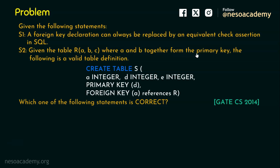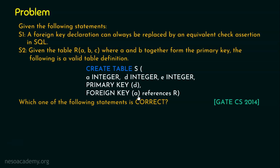...the following is a valid table definition: create table S with attributes A of integer type, D of integer type, E of integer type, where D is the primary key. There is also a foreign key where A references relation R, and R has three attributes A, B, and C where A and B together form the primary key.